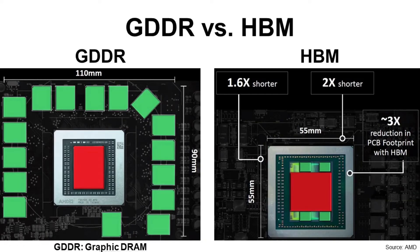Here is a comparison between GDDR and HBM. GDDR is placed around GPU on PCB as a separate package, but HBM is placed on a silicon interposer within the same package as the GPU. It means HBM module and GPU are integrated in the same package. For this case, GDDR is 110 by 90 mm but HBM is 55 by 55 mm — much smaller.